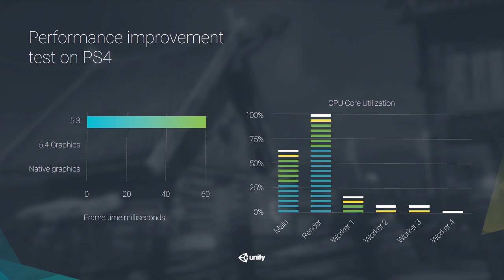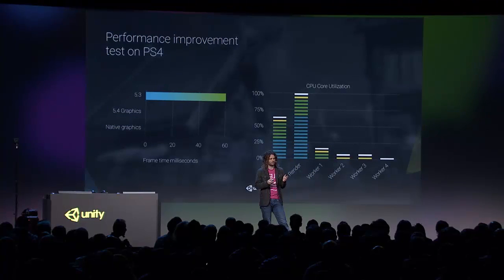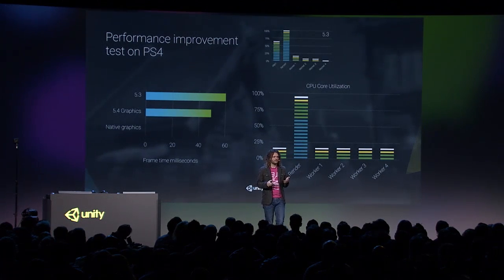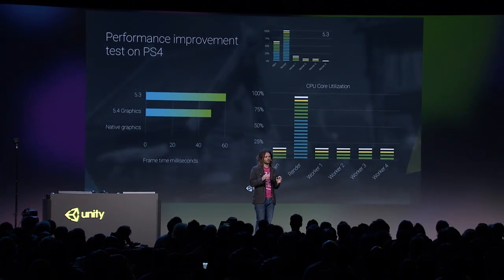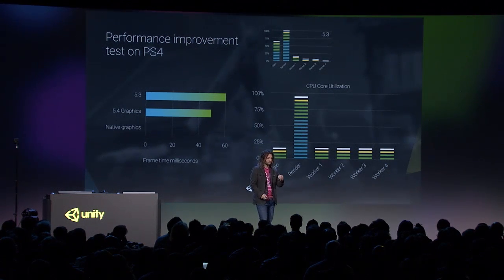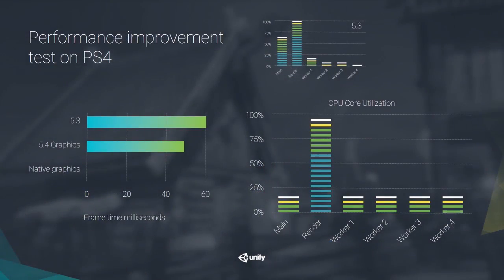In Unity 5.4 with rendering jobs, we made it so that the work done on the main thread can be distributed to the worker threads. So you can see the main thread CPU consumption goes all the way down. But what happens is that the CPU consumption on the render thread goes all the way up — and it's really the bottleneck now. Overall, in this particular game, it's only a 20% increase. But C# game code can now run and do work in parallel on the main thread, so you have all this free time to run your game code.